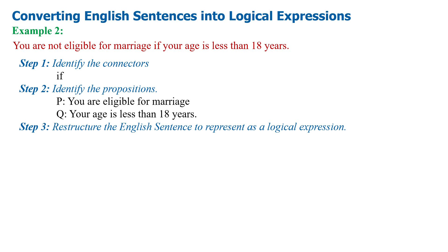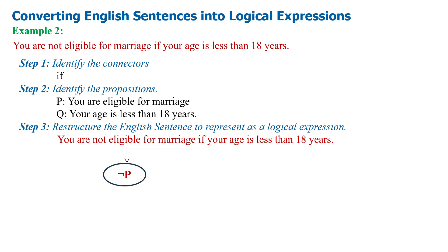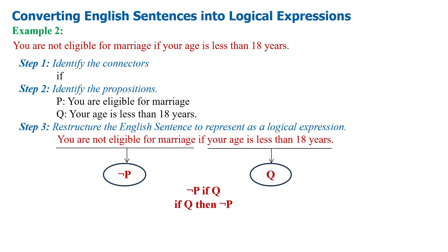Step 3 — restructure the English sentence to represent as a logical expression. 'You are not eligible for marriage' can be represented with negation P, because P represents 'you are eligible for marriage'. 'Your age is less than 18 years' can be represented with Q. These two can be combined using the conditional logical operator: negation P if Q, rewritten as Q implies negation P.